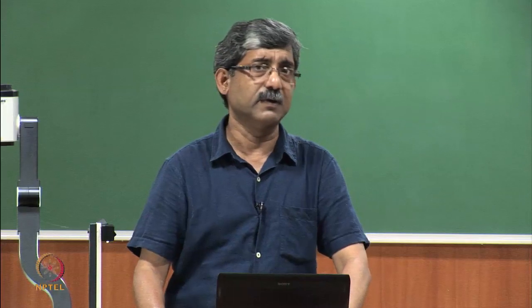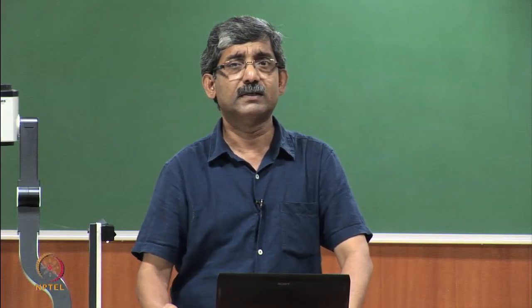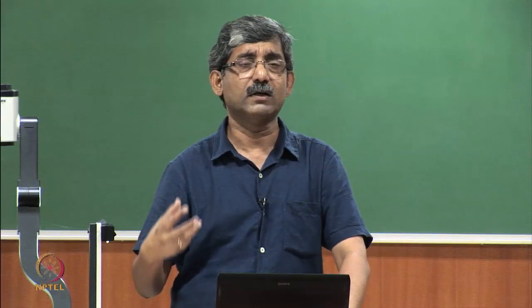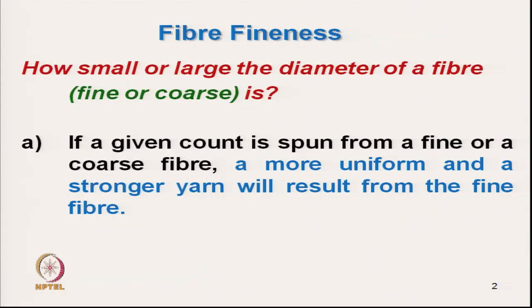Fineness is basically related to cross-sectional shape. If a fibre is fine, its cross-sectional area should be less. However, the main problem with most textile fibres is that the cross section is not uniform. By knowing fibre fineness, we can understand various process-related parameters.